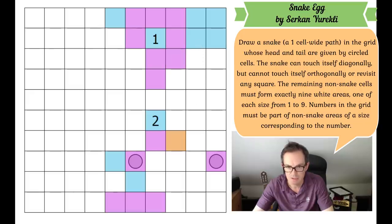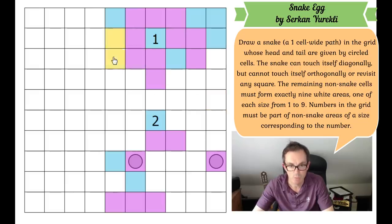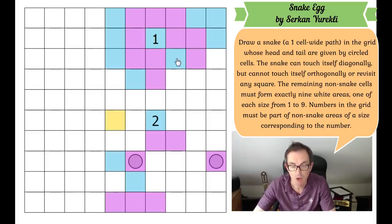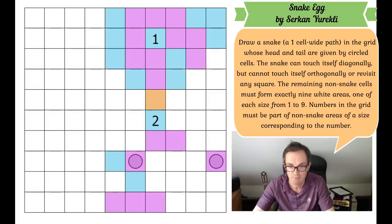This is blue for sure, which means the snake comes up here. This has to be snake, therefore those three are all blue. This blue region can't be one cell large because we already have the one-cell region, so it must take another cell — but that means the snake is forced downwards.